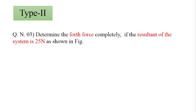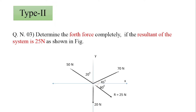Hello everyone, welcome back to our channel. Today we'll see Type 2 numericals. In Type 2 numericals, the statement is like this: determine the fourth force completely if the resultant of the system is 25 newton as shown in the figure. So instead of finding the resultant, they give you the value of the resultant and ask you to find one unknown force.